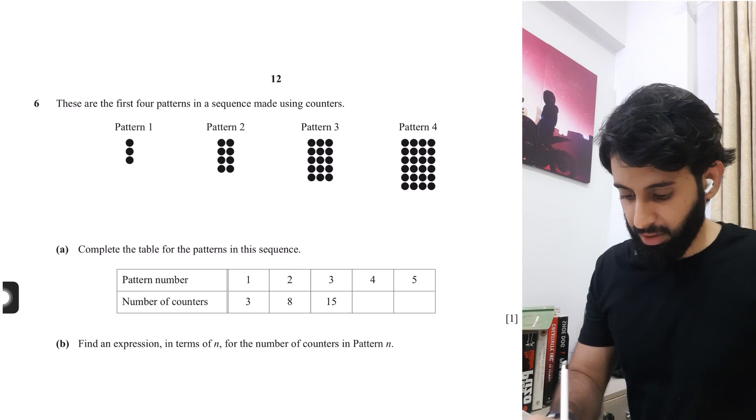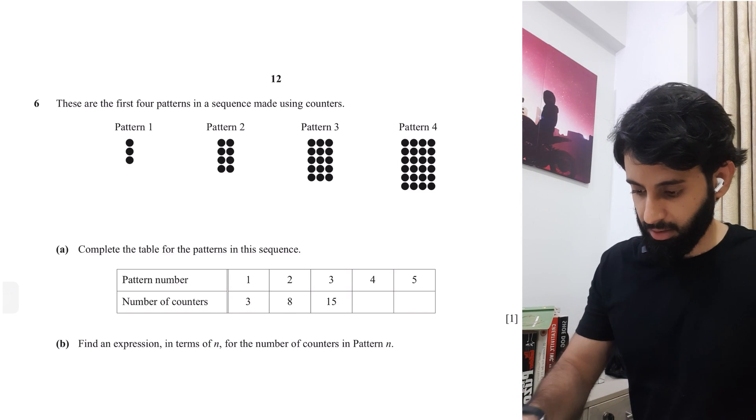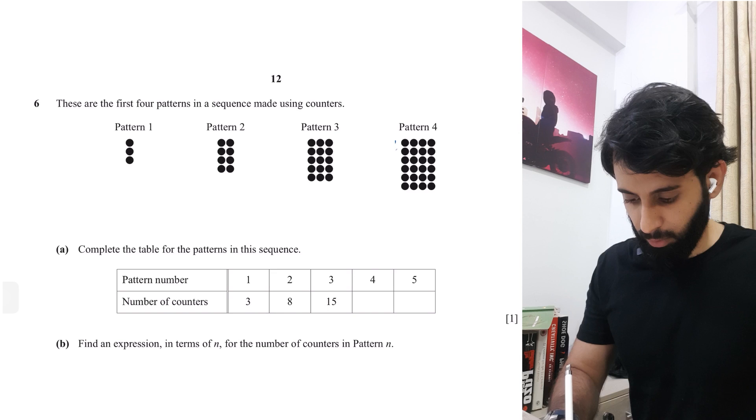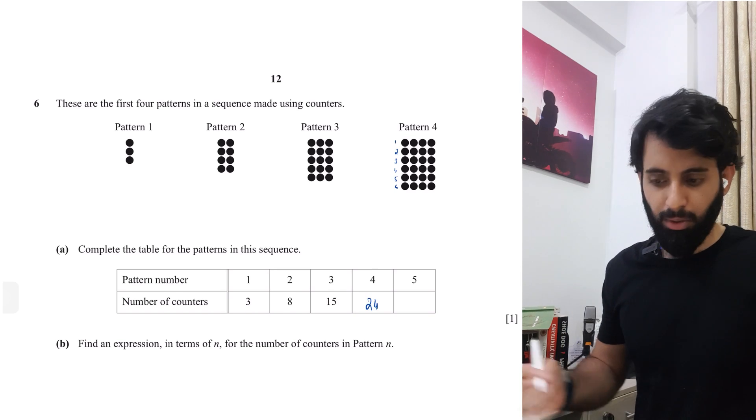So if I count the number of counters in pattern four, so that's four, eight, 12. Well, you don't really have to do that, let's just count the number of rows that we have one, two, three, four, five, and six. So six times four. So that's got to be 24.